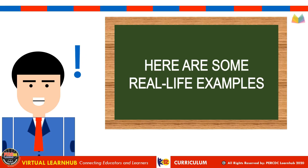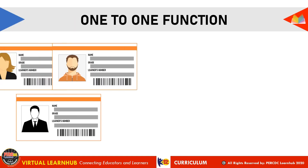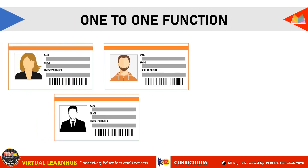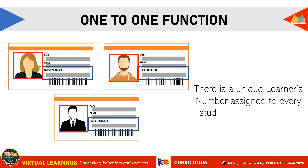Here are some real-life examples. In a school, we interviewed three students, and each of these students has their own learner's number. This learner's number is unique to them and cannot be assigned to another student. Therefore, there is a unique learner's number assigned to every student, and since it cannot be given to another, we can consider this relation to be a one-to-one function.